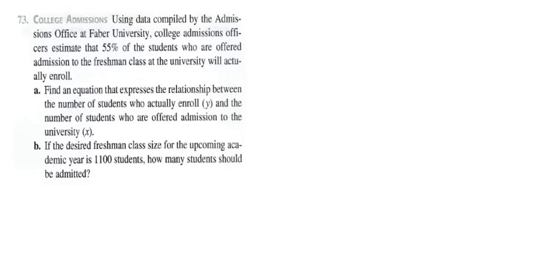So 55% of the students who are offered admission will actually enroll. Find an equation that expresses the relationship between the number of students who actually enroll, we'll call that Y, and the number of students who are offered admission to the university, we'll call that X.